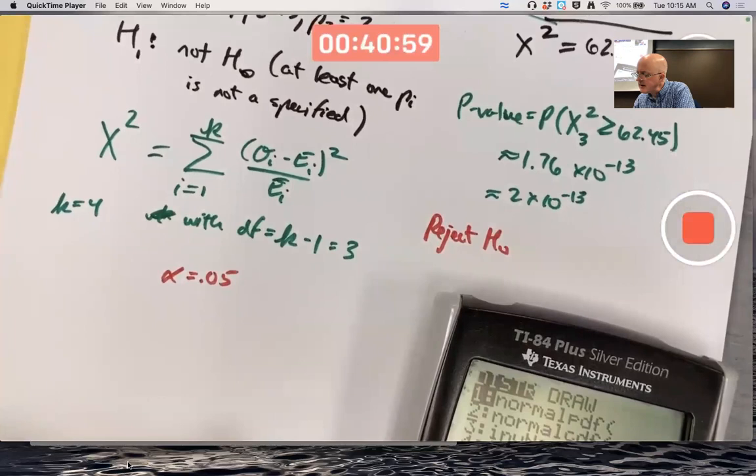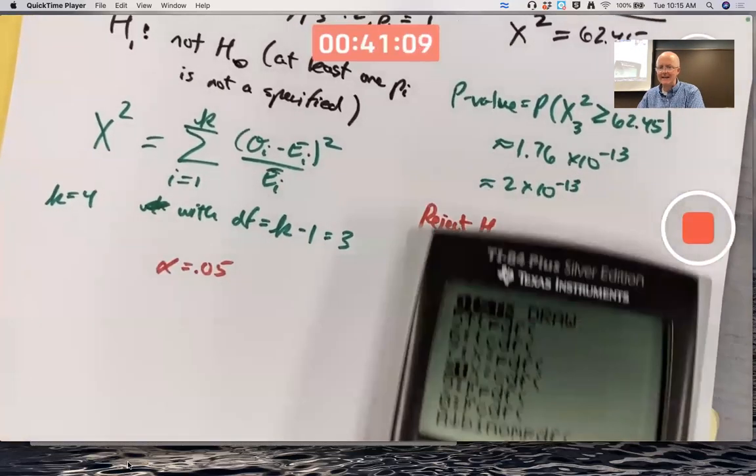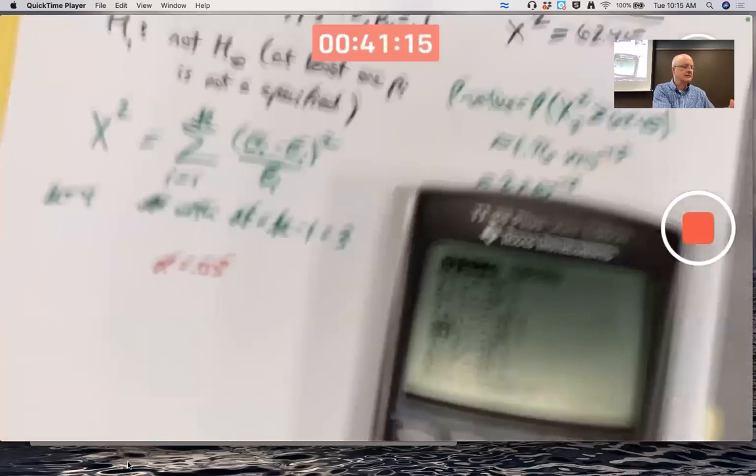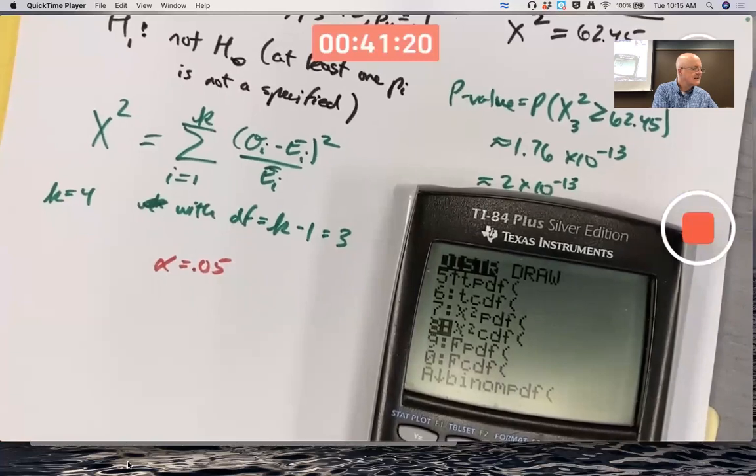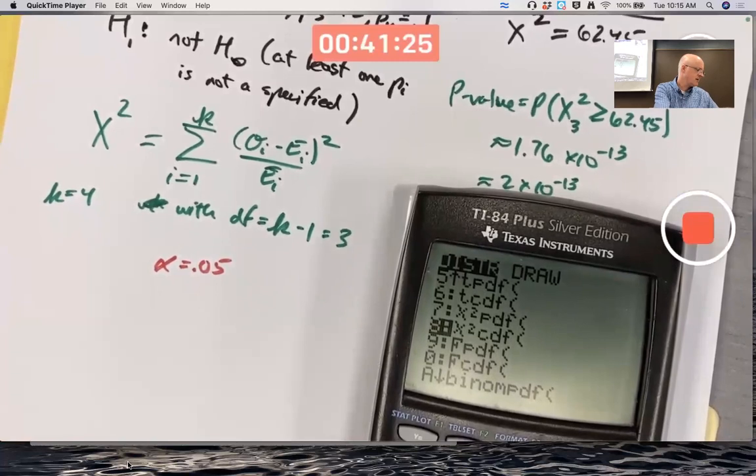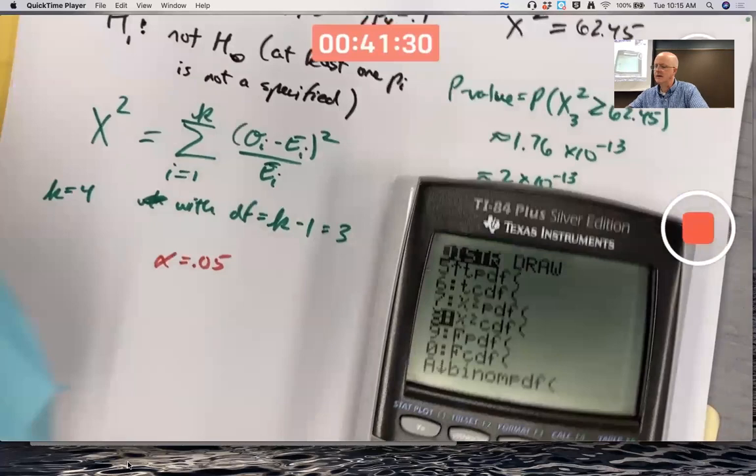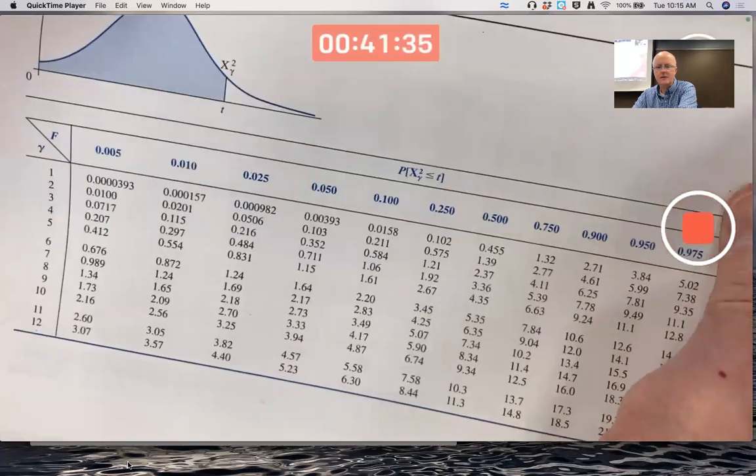I'm not sure if the calculator has an inverse chi-square. Nope, it doesn't look like it does. You'd have to, well, you could use the table, you could use some guessing. Let's use the table to help us do some guessing. Chi-squared tables, what I'm looking for: 3 degrees of freedom.